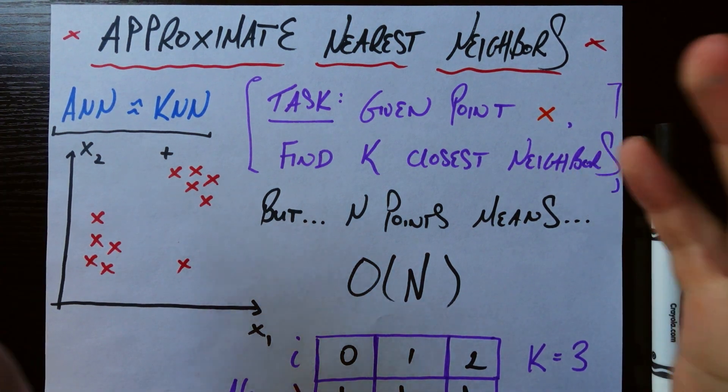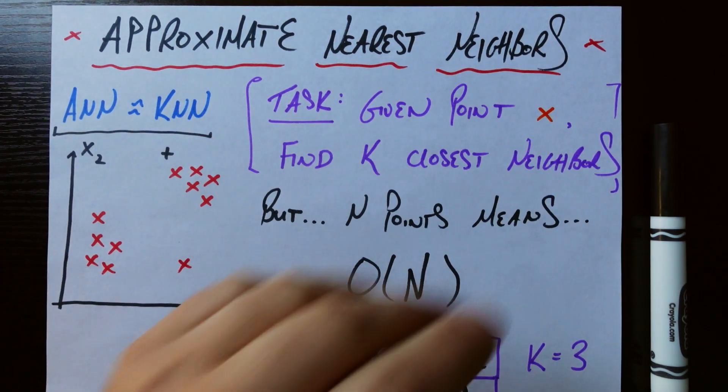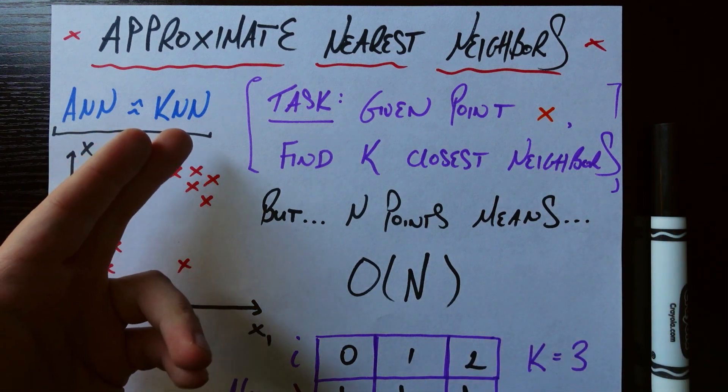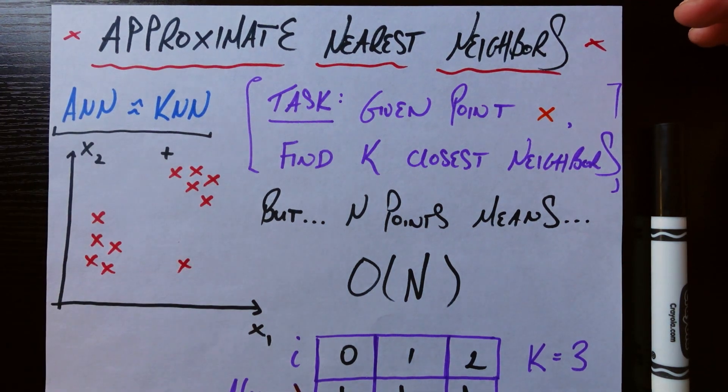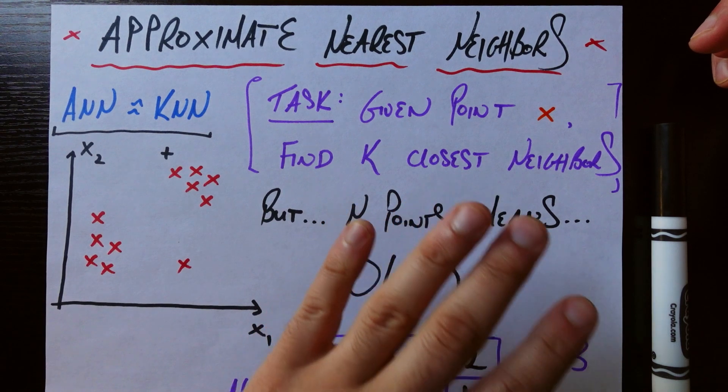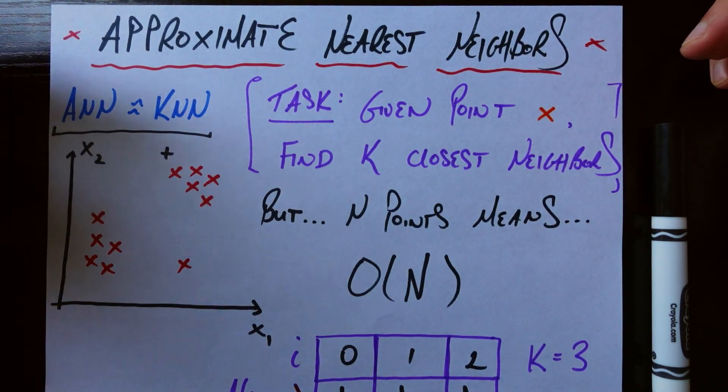Hello everyone, welcome back. Today we're going to be talking about an extremely practical method in data science called approximate nearest neighbors. Now what does this sound like? Obviously it sounds like k-nearest neighbors, and in fact it's trying to achieve the same goal as k-nearest neighbors, but it's going to be fixing one of the biggest issues with k-nearest neighbors. And before we get into that biggest issue, let's remind ourselves about how k-nearest neighbor works and what it's trying to achieve.